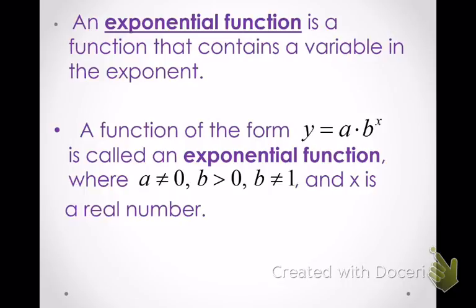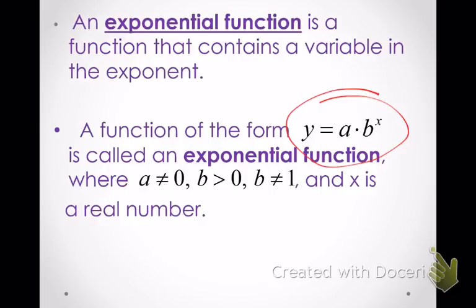An exponential function — there are different types of functions. Linear functions give you a line when you graph them. We talked about absolute value functions, and those graphs look like V's. Exponential functions' graphs are going to be a little less predictable, so we're going to go back to basics when it comes time to graph them. An exponential function is a function that contains a variable in the exponent. It looks like this: y equals a times b to the x. The x in an exponential function is an exponent, and that's the first time we've seen that.